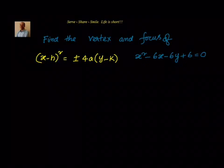So first thing what we will do, we will take all x variables on the left side and the y we will move them to the right side. So it will become x² - 6x = 6y - 6.